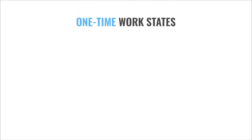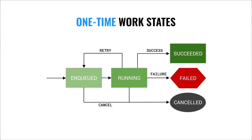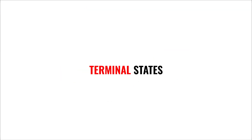The first thing that you should know is that there is a difference between a work state of a one-time and a periodic work request. In this image, you can see work states of a one-time work request. This work request can be enqueued, then after it starts the state will change to running, and after it completes it can receive a cancelled state. Those last three states are terminal states because when either one of them is called, the work is done.